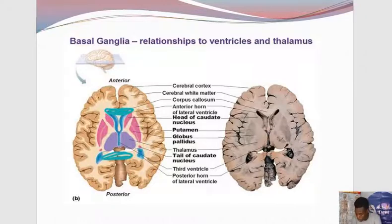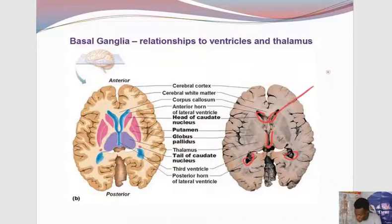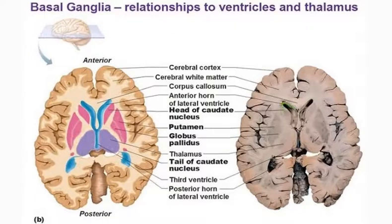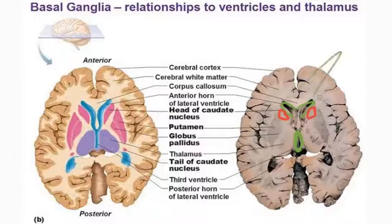Now that we've established some basic structures in this horizontal section — the ventricles, the longitudinal fissure associated with the anterior cerebral artery — I want to draw your attention to some gray matter as well. You're familiar with some of them already. Immediately lateral to the anterior horn of the lateral ventricle we'll be having the head of the caudate nucleus. Lateral to the third ventricle — by the way this is the lateral ventricle — we have the head of the caudate nucleus, and lateral to the third ventricle we have the two thalami.